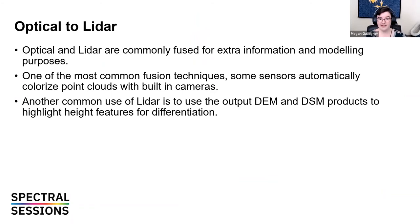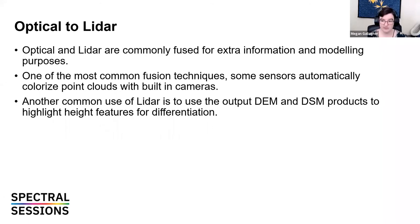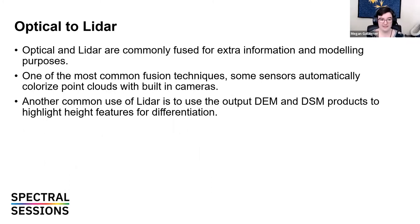Next up is optical-to-LiDAR. Optical and LiDAR are commonly fused for extra information and modeling purposes. If you need height information — DEMs, LiDAR ortho photography, photogrammetry — putting those things together probably gets better resolutions and draws more information. One of the most common fusion techniques is colorizing point clouds with built-in cameras, which is a very basic kind of fusion technique but very useful for viewing and classifying. Another common use of LiDAR is using the output DEM and DSM products to highlight height features for differentiation.